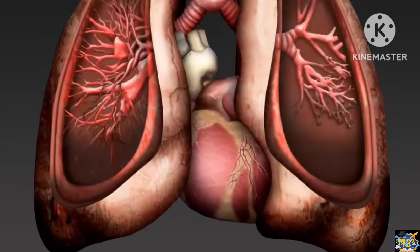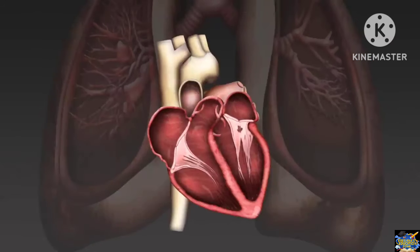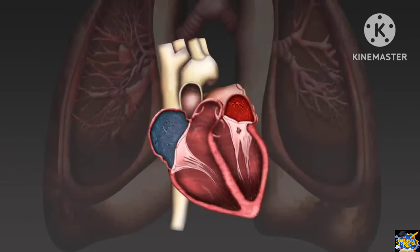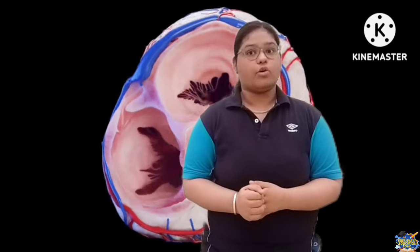First of all, the heart is a pumping organ. It works like a motor which pumps our blood. It is a muscular organ made from cardiac muscles. We can't control it, which is why it is called an involuntary muscular organ — involuntary cardiac muscles.